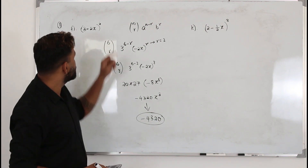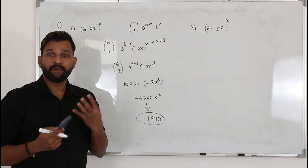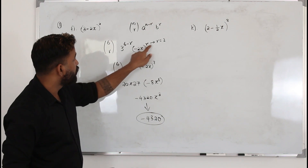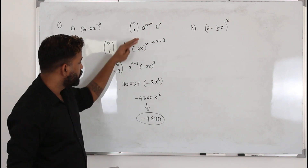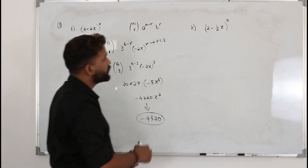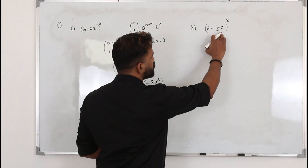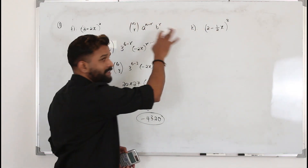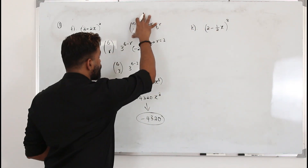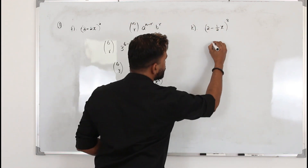If the same question asked for the coefficient of x⁴, you would replace r by 4 instead. Now look at question K — you have a fraction here, but the method is the same. Use the general term and replace n by 8.